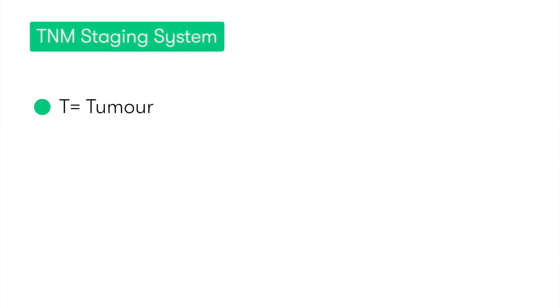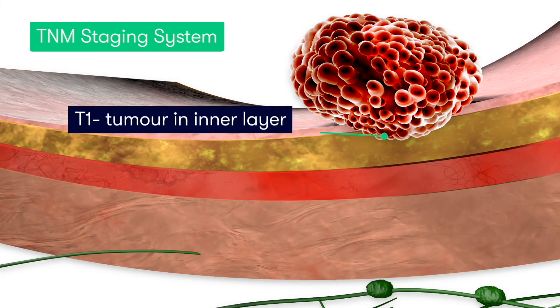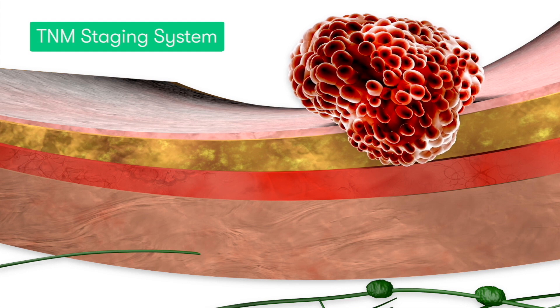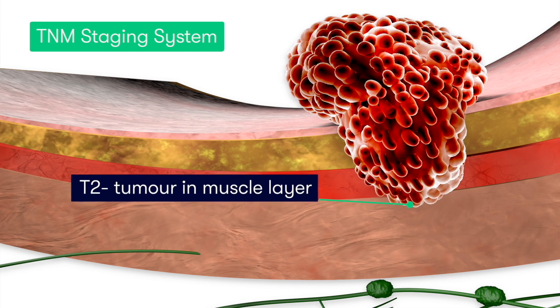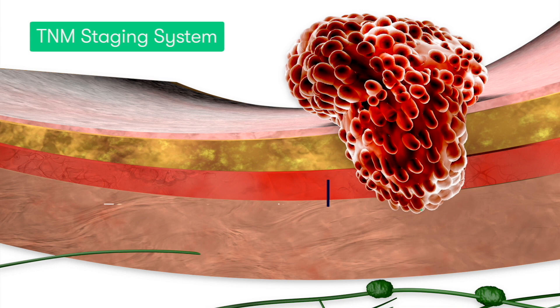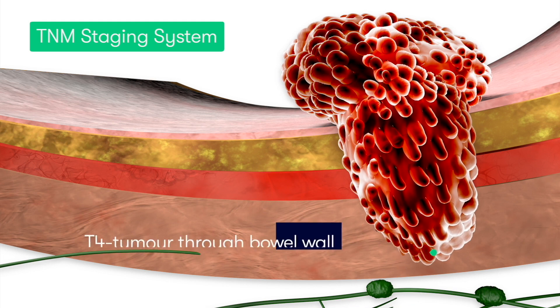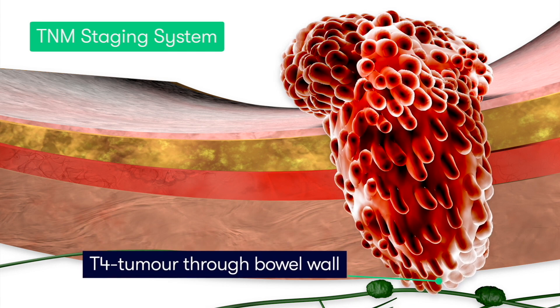Starting with the TNM system, T refers to the tumour itself — how far has the tumour grown through the bowel wall? In T1, the tumour is in the inner layer of the bowel. In T2, the tumour has grown into the muscle layer of the bowel. In T3, the tumour has extended into the outer lining of the bowel wall. And in T4, the tumour has grown through the outer lining of the bowel wall.